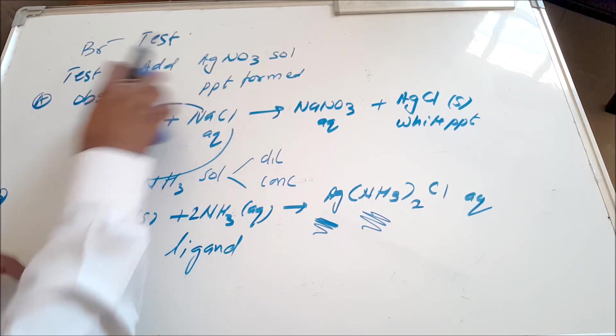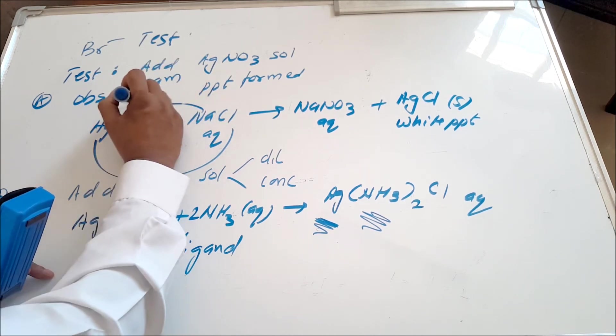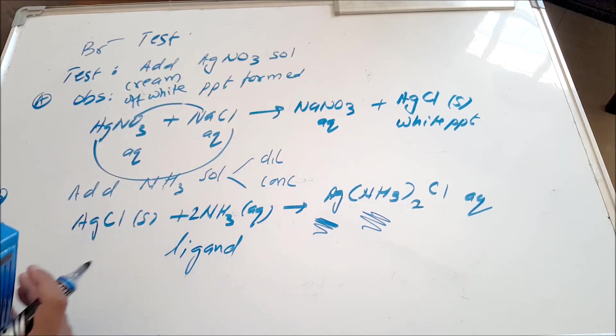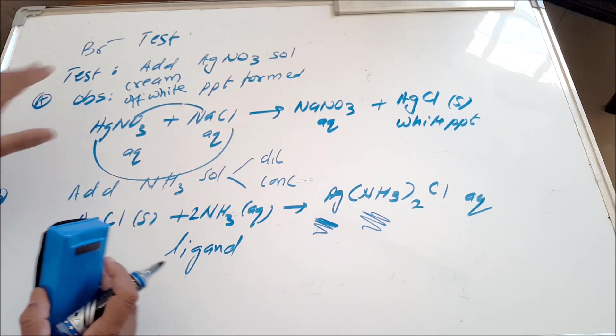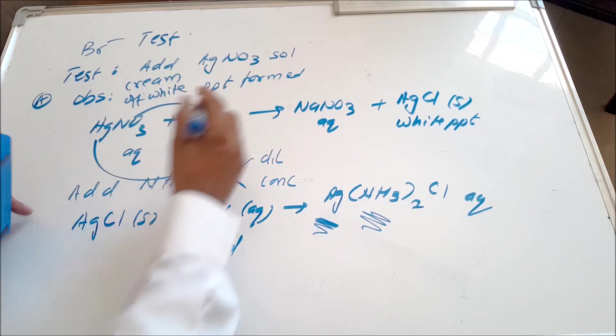But you don't get the white precipitate now. You get cream or off-white precipitate. So you get off-white or cream precipitate. Since it's bromide, all I have to do - that's why it kind of makes sense if you learn the first set of equations, much easier for you.